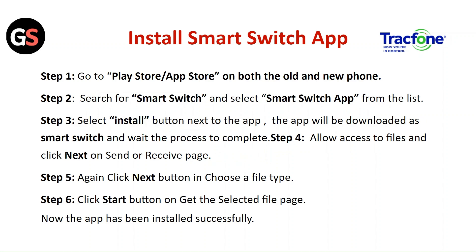Step 4: Allow access to the file and click Next on the Send or Receive page. Step 5: Again click the Next button and choose a file type. Step 6: Click on the Start button on the Get the Selected File page.